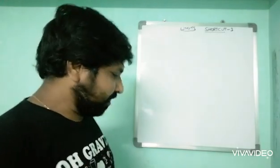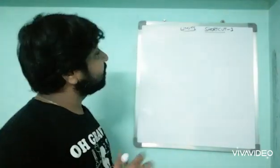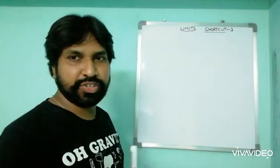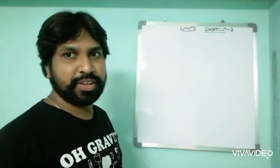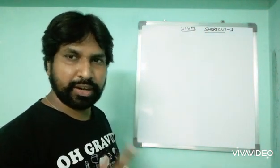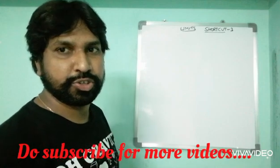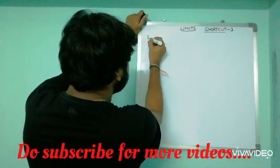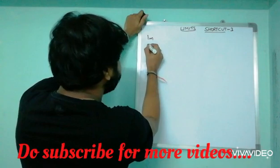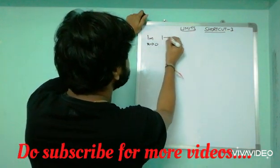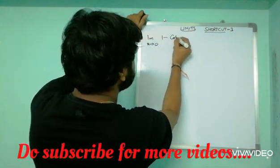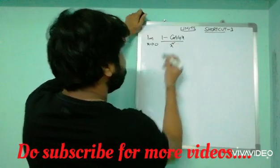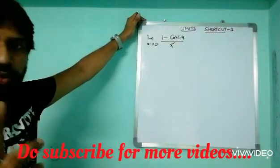Good morning friends. Today I'm going to discuss a shortcut trick in limits — it's a beautiful shortcut, let us enjoy. As usual, first I'm going to discuss the standard method, then I'll go with the shortcut. The question is: limit x tends to 0, (1 minus cos 4x) by x square. This question we can solve in two ways.